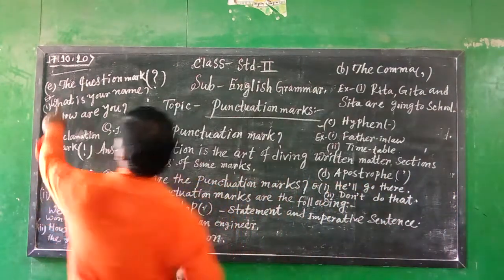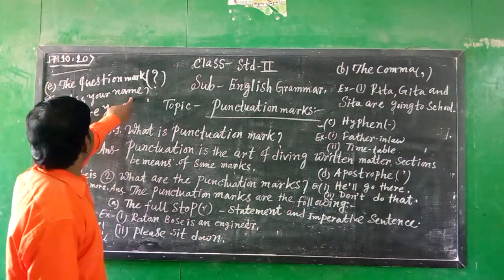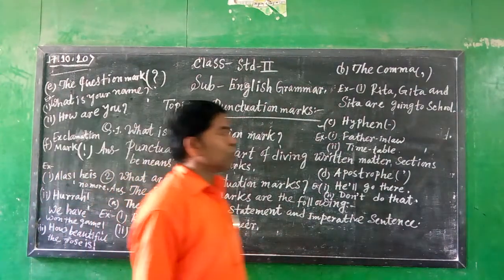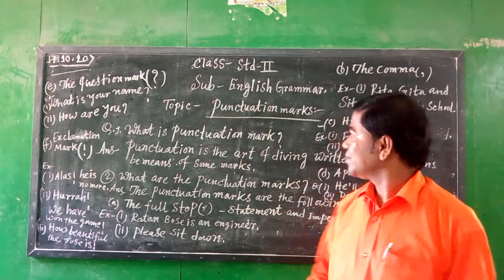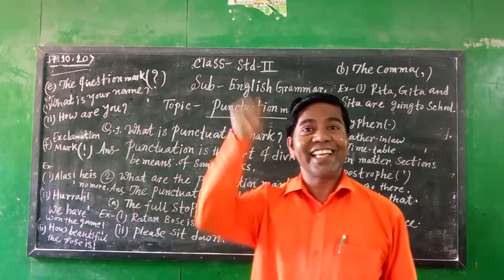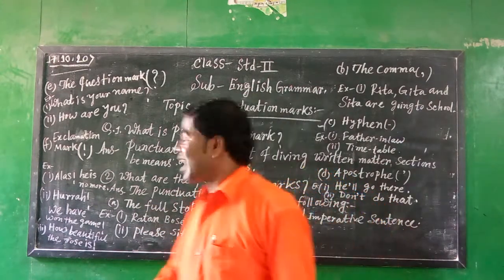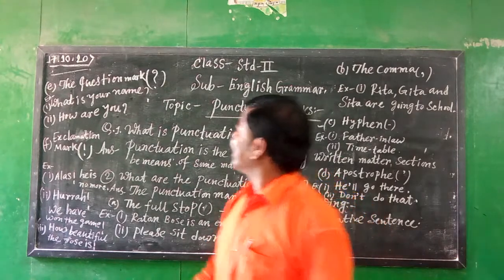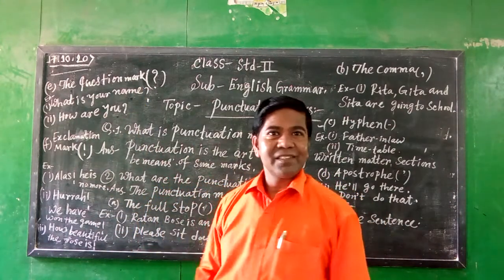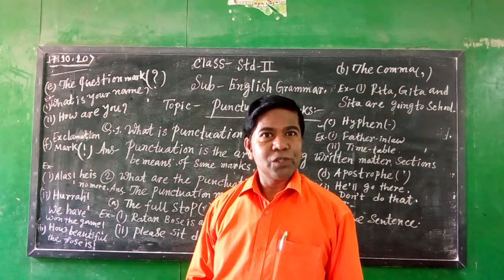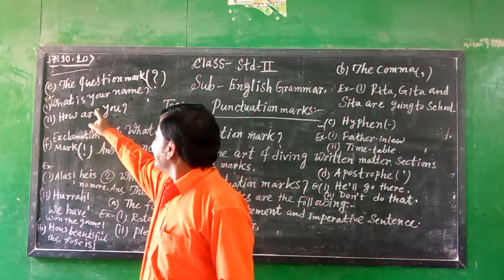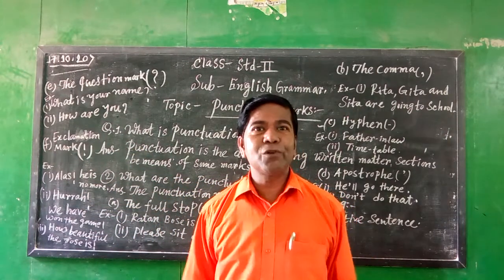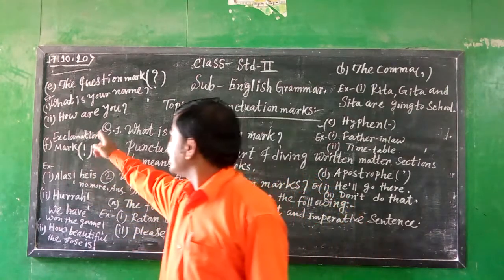Number five: question marks. What is your name? How are you? We should use question marks when we ask any question. What is your name? What is your father's name? What is the name of your state? What is the name of your country? Why are you living? How are you? When do you get up? And so on.